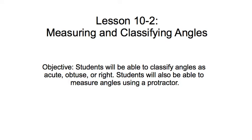This is a lesson on measuring and classifying angles. Our objective today is for you, the students, to be able to classify angles as either obtuse, acute, or right, and then you're also going to be able to use a protractor to measure angles. This is a key lesson.